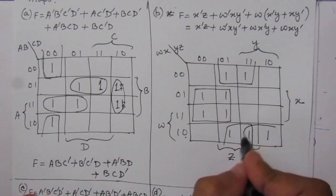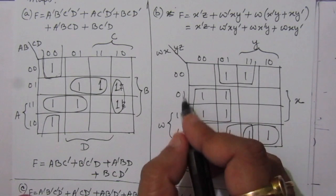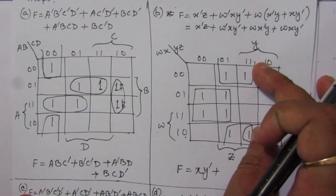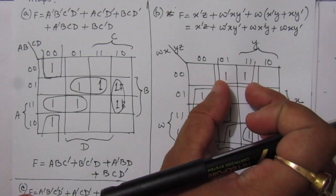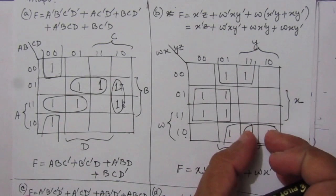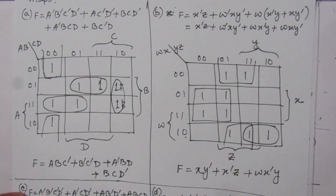Now combining the groups: the first combination gives X Y-bar; the second combination gives X-bar Z; and the third combination gives W X-bar Y. So the simplified expression for part B is: F = XY̅ + X̄Z + WX̄Y.